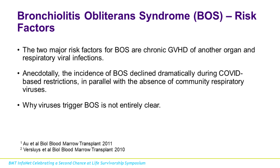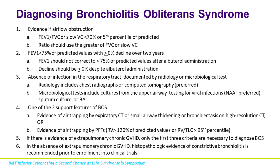The two major risk factors for bronchiolitis obliterans syndrome are GVHD of another organ and respiratory viral infections. Interestingly, during the COVID pandemic we saw fewer cases of BOS — possibly because fewer other respiratory viruses were circulating in the community. Why viruses trigger BOS is not entirely clear; this is something being actively investigated to identify why viral infections seem to trigger lung GVHD.